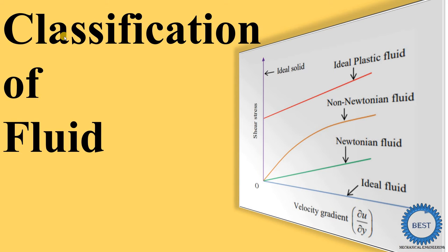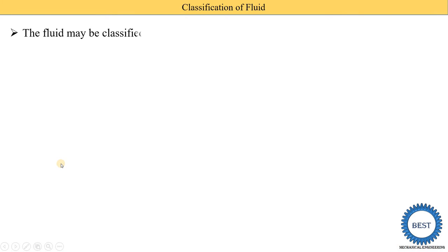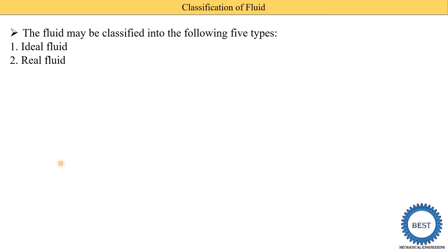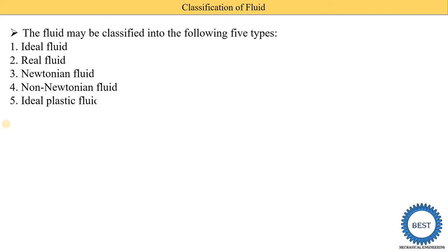In this video I explain the classification of fluid, also called the types of fluid. The fluid may be classified into the following five types: first is ideal fluid, second is real fluid, third is Newtonian fluid, fourth is non-Newtonian fluid, and fifth is ideal plastic fluid.